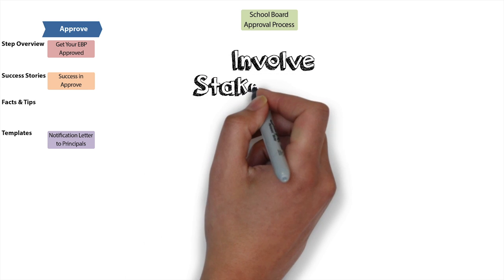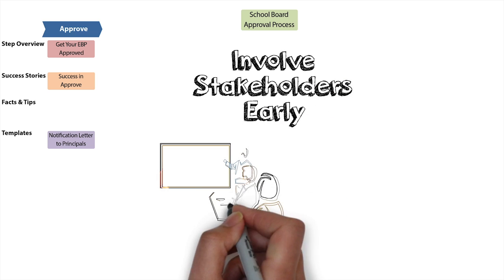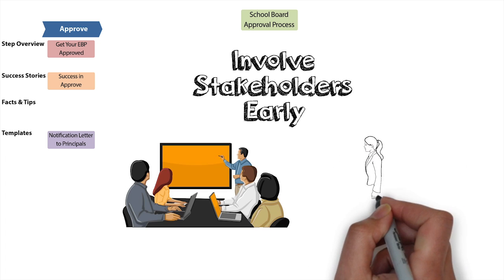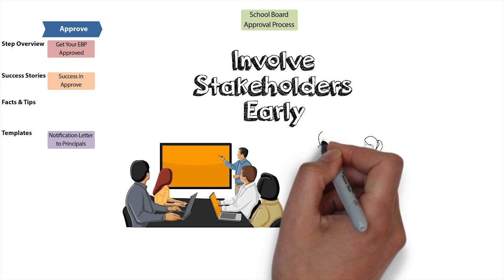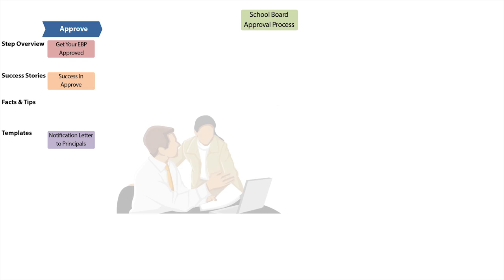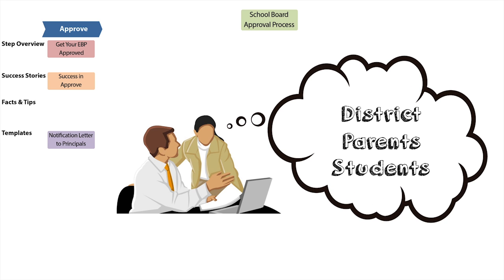Key to this is involving school board members and other important decision makers, such as the superintendent. Do this early. If school board members were not involved when your SHAC selected a program and created the recommendation letter, now is a good time to start engaging them. Have one-on-one meetings with board members before the board votes so that they can become familiar with the program. Ensure they understand the importance of sexual health education to your district, parents, and students.